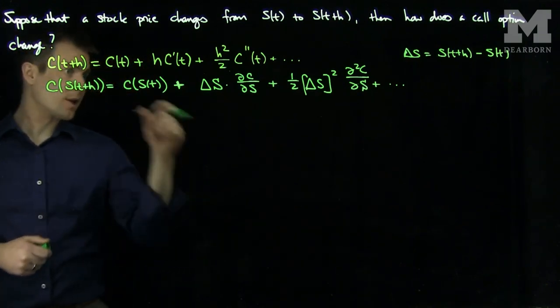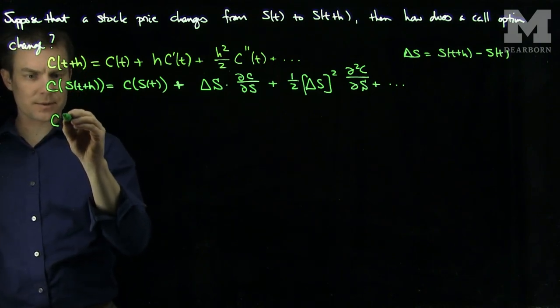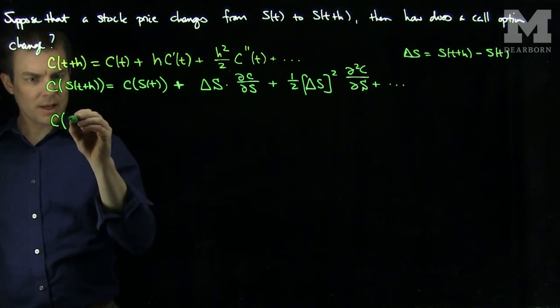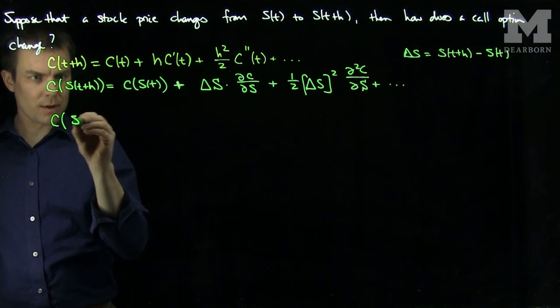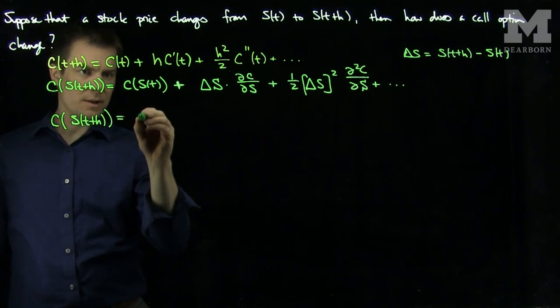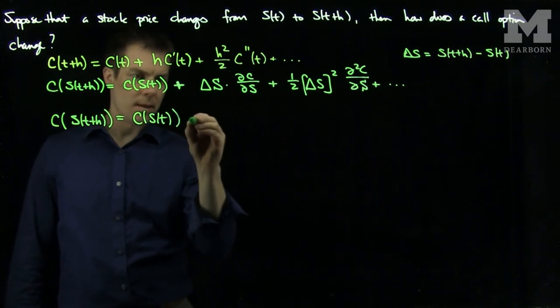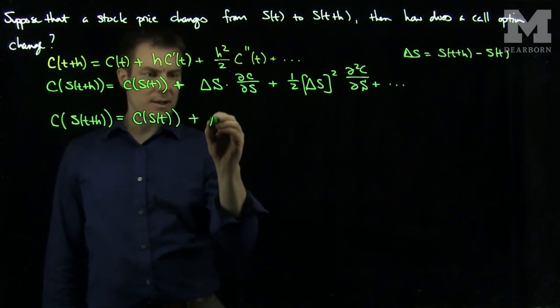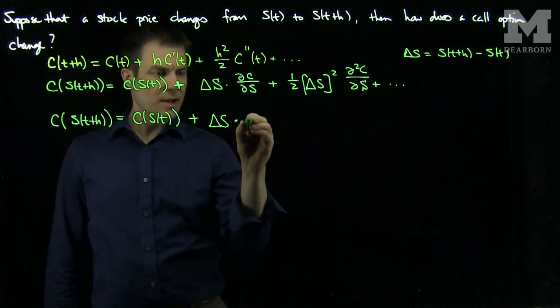So now we can write this out in terms of delta and gamma. This tells me that C(S(t+h)) is equal to C(S(t)) plus ΔS times the delta of that call option.